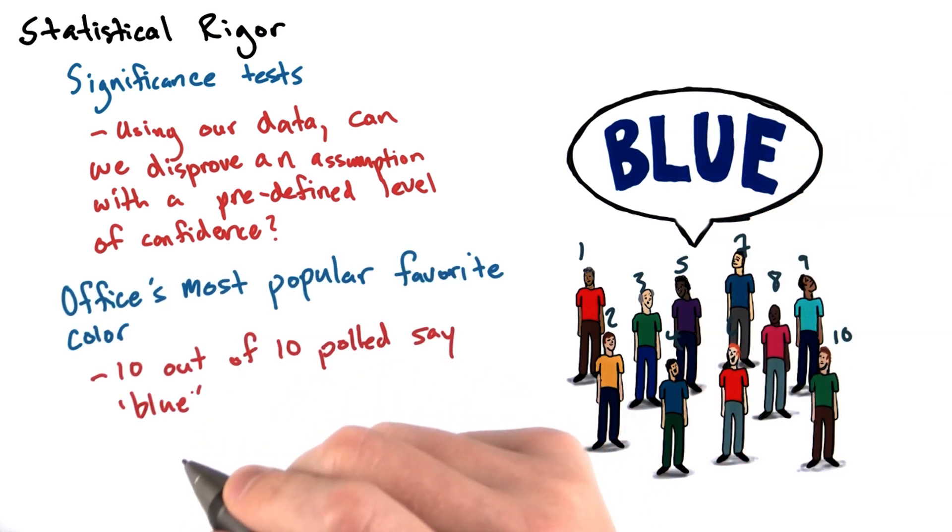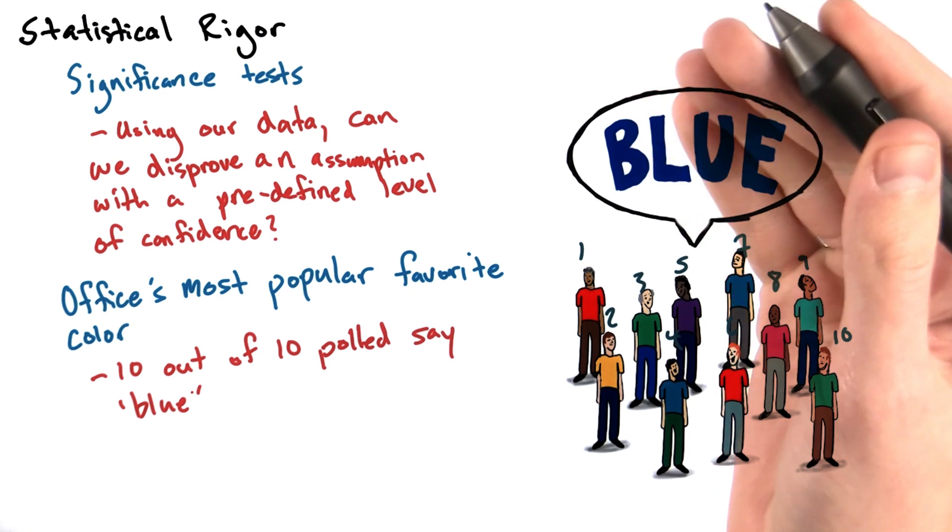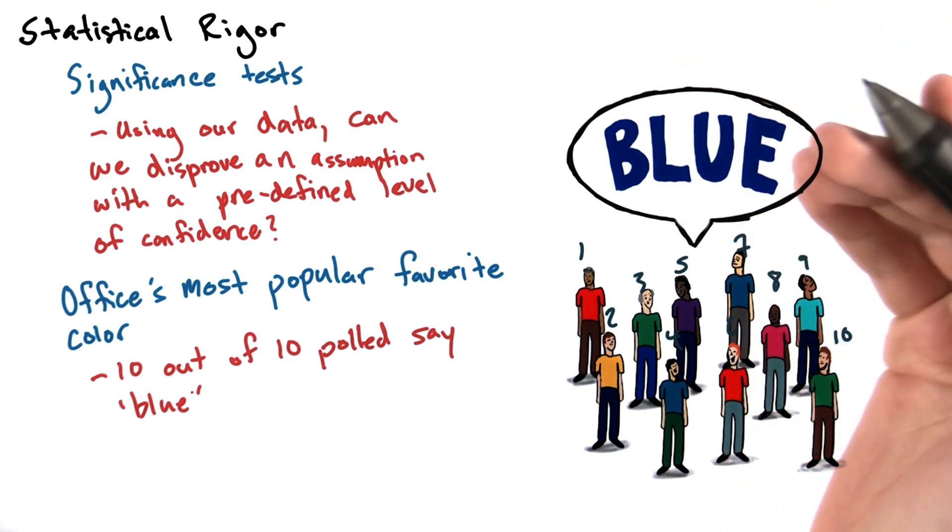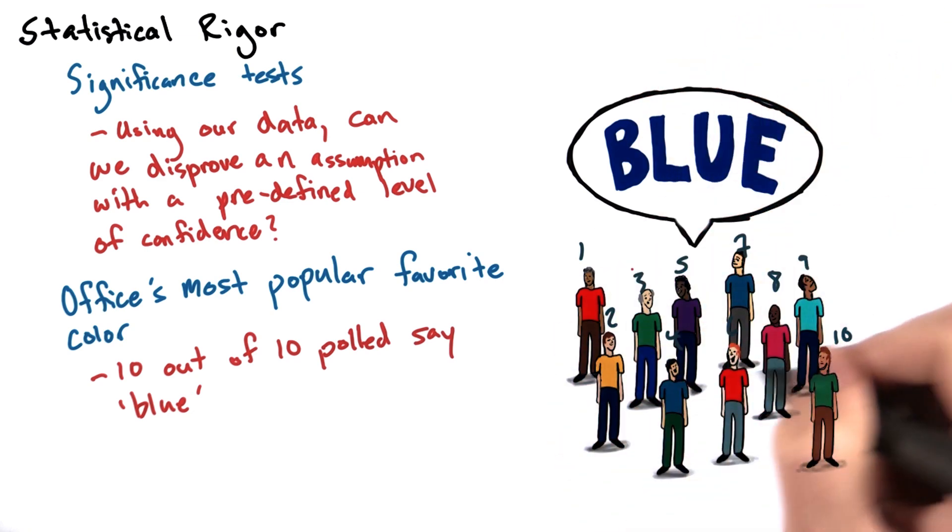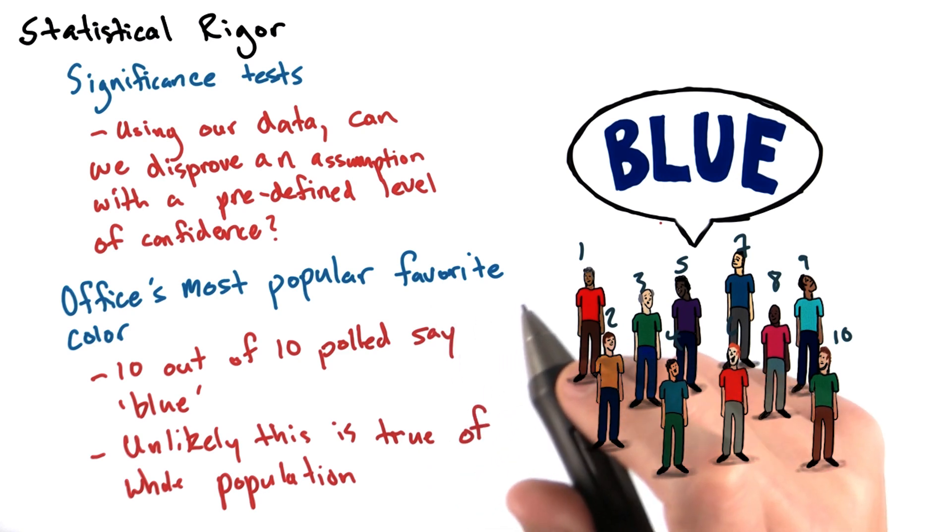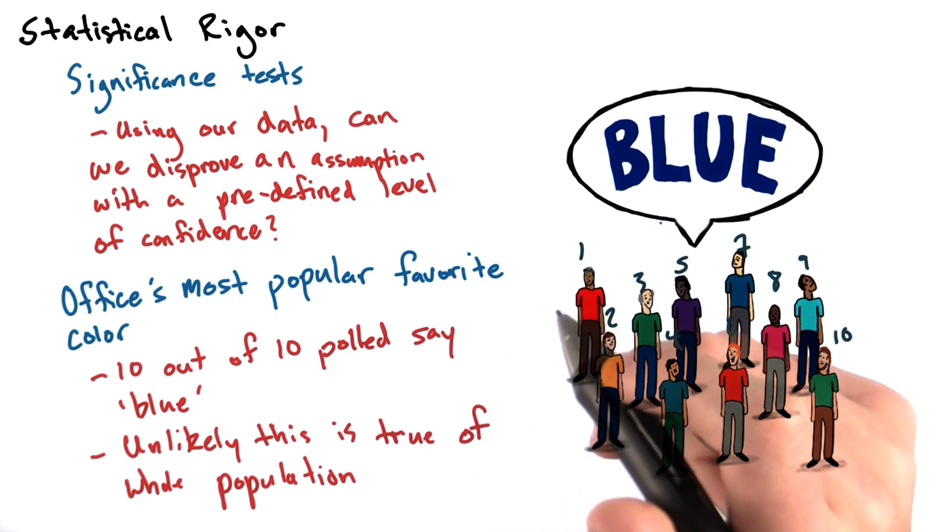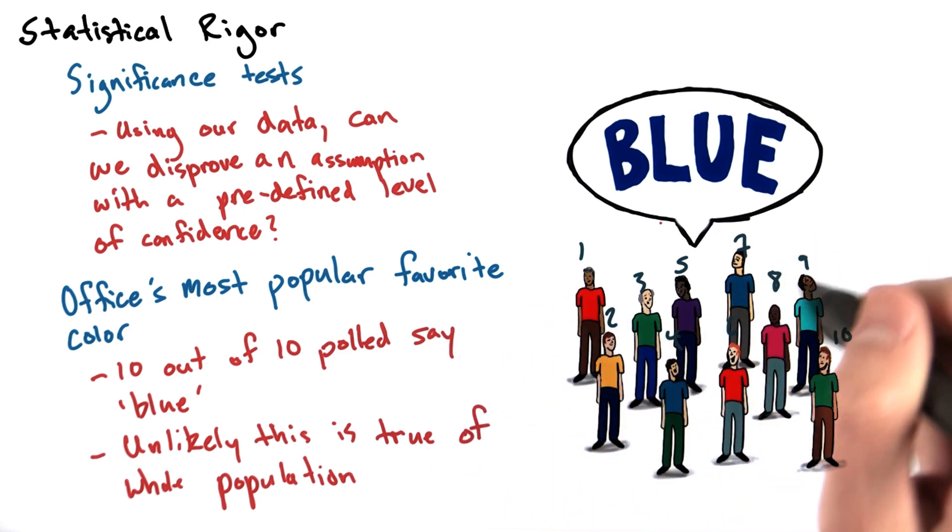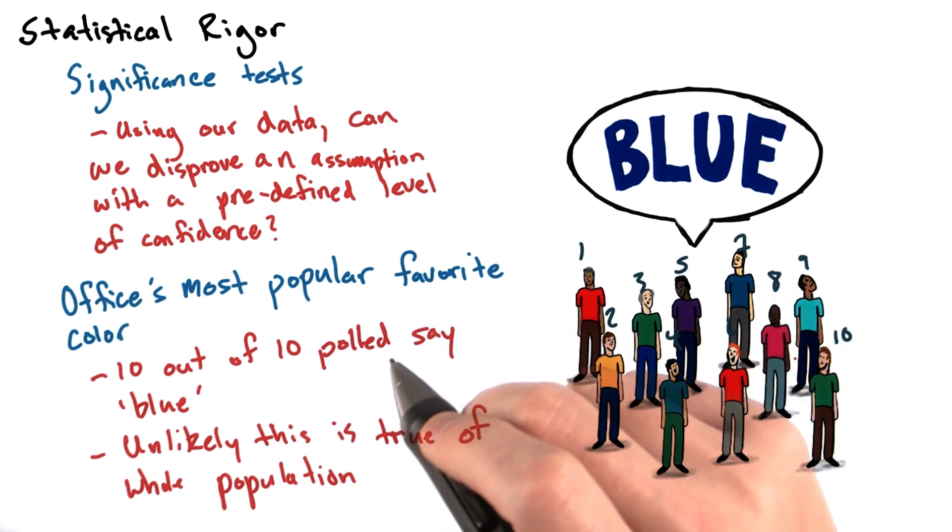Of course, both you and I have some intuitive idea that this probably isn't true. We just happened to come across 10 people who all liked blue. Statistics formalizes this kind of logic, so we can assess the feasibility of a result we get with a smaller sample when trying to say something about a larger population.